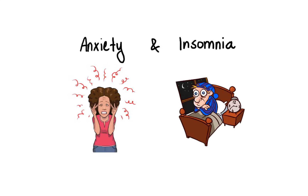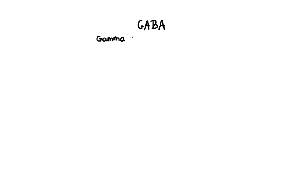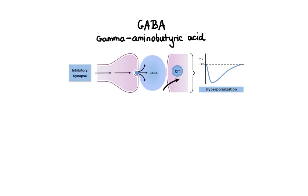In order to gain a better understanding of how anxiolytic and hypnotic drugs work, first we need to discuss the role of GABA in the central nervous system. Gamma-aminobutyric acid, or GABA for short, is a major inhibitory neurotransmitter. When GABA reaches and binds to a specific receptor located on a neuron, it reduces the activity level of that neuron and makes it less likely to fire its action potential. GABA is recognized by both ligand-gated and G-protein-linked GABA receptors, and in this lecture we are going to focus on the ligand-gated GABA receptor called GABA-A, as this is the main target of many anxiolytic and hypnotic agents.